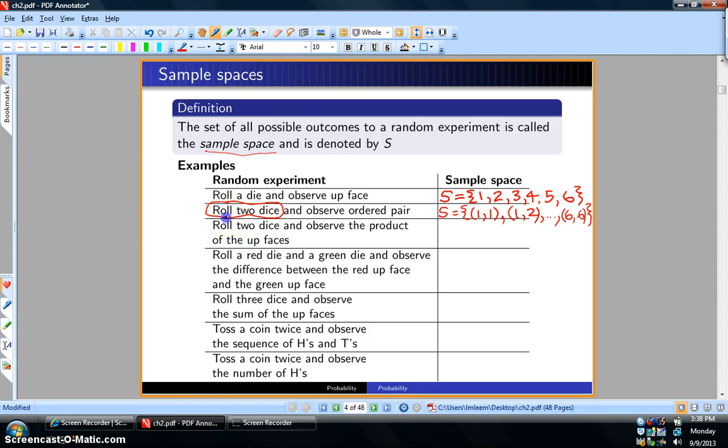In this third example, we're again rolling two dice, but this time observing the product of the up faces. The product could be one if you roll one-one, or two if you roll one-two or two-one, or three. The largest it could be is 36, but there are gaps. For example, you can't get a product of seven.